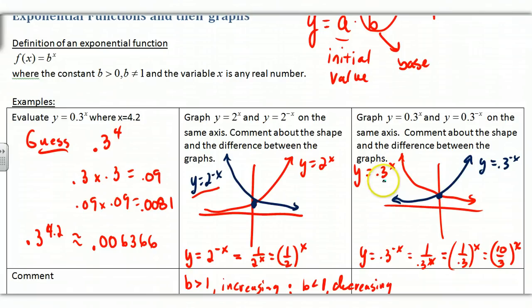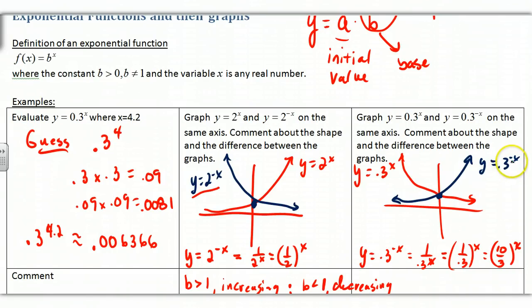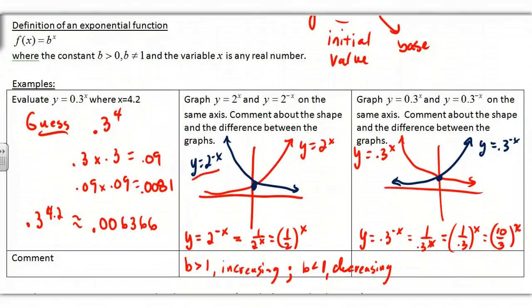For 0.3^x, B is less than 1, so it's decreasing. If I raise it to the negative x, that switches the base: 3/10 flipped gives 10/3, which is greater than 1, so the function is strictly increasing. That gives you examples of what happens with different values of B.